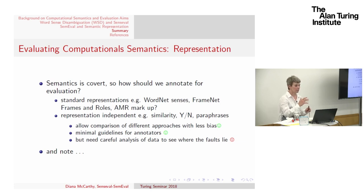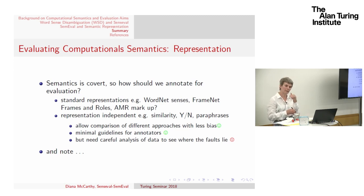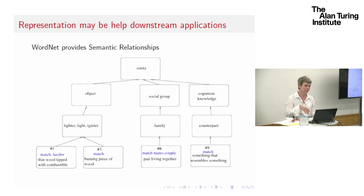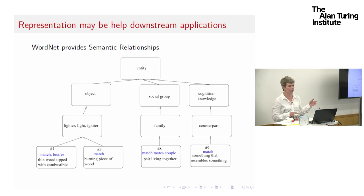Why I like representation-independent approaches: they allow comparison of completely different approaches, there are minimal guidelines given to annotators — you're just getting them to make quite intuitive judgments — and they've been shown to be quite useful for applications. However, you do need to be very careful of the data to actually look under the hood and see where the faults lie, perhaps more so than with standard representations. Representation-dependent approaches also provide a lot of useful other information — WordNet provides all sorts of semantic relationships still used in many applications.